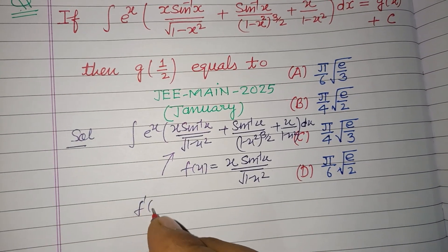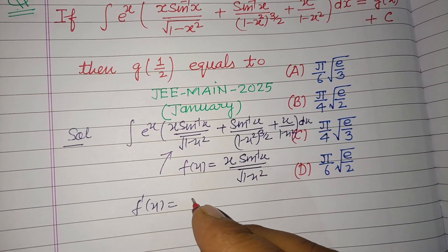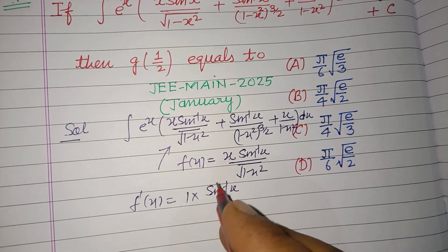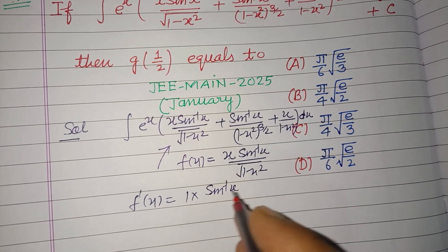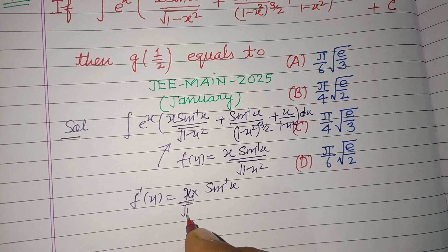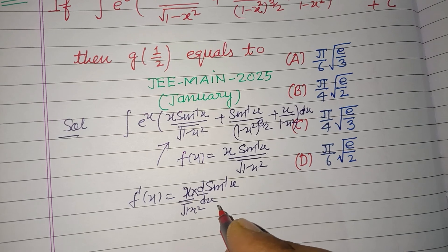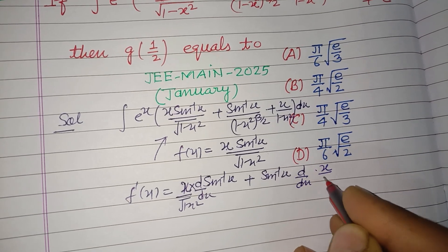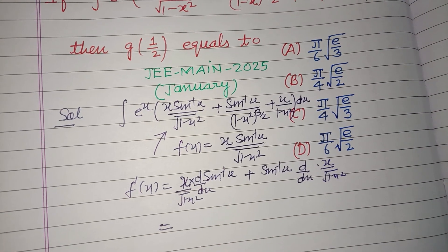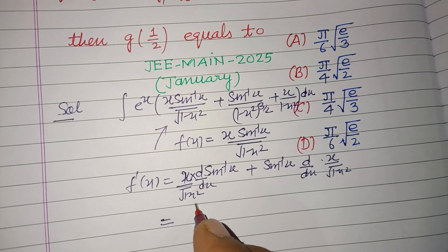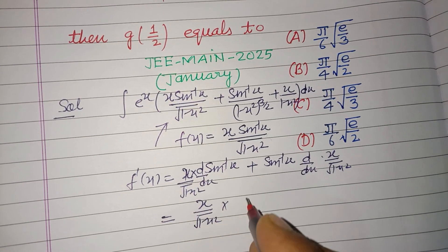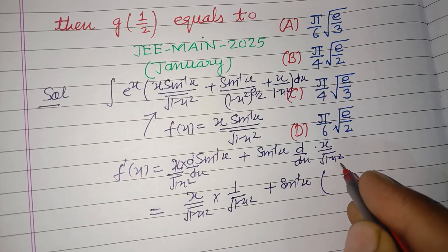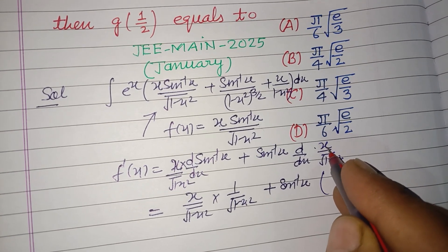Now we differentiate f(x). Using the product rule, f'(x) equals: differentiation of x is 1, times sin⁻¹x / √(1-x²), plus differentiation of sin⁻¹x which is 1/√(1-x²), times x / √(1-x²), since x is treated as constant in that part.